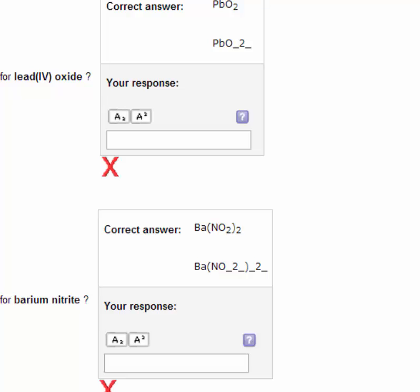But anyway, barium nitrite, Ba(NO2)2, and there's parentheses around the nitrite, and there's a 2 subscript, because you need two nitrites for each barium, because barium is positive 2, and each nitrite is negative 1.